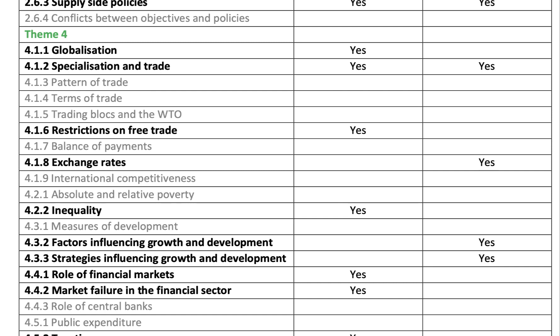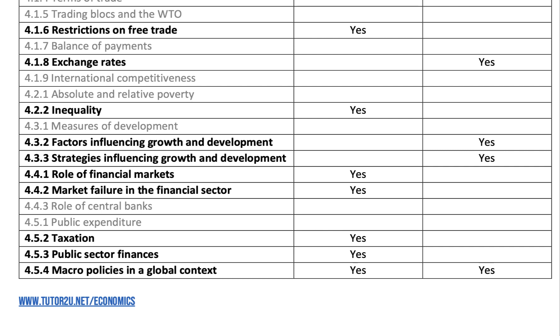So exchange rates could well feature on paper three. They've taken out international competitiveness completely, and absolute and relative poverty. But they've included inequality on paper two — and of course inequality is relative poverty. Crucially, they've taken out measures of development, like the Human Development Index. Though I think you'll still want to revise those because they give a holistic understanding of countries' development trajectories.